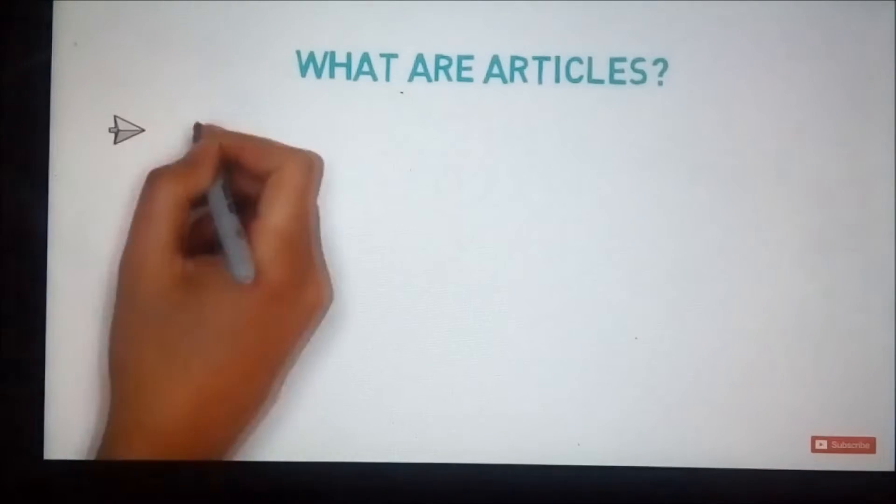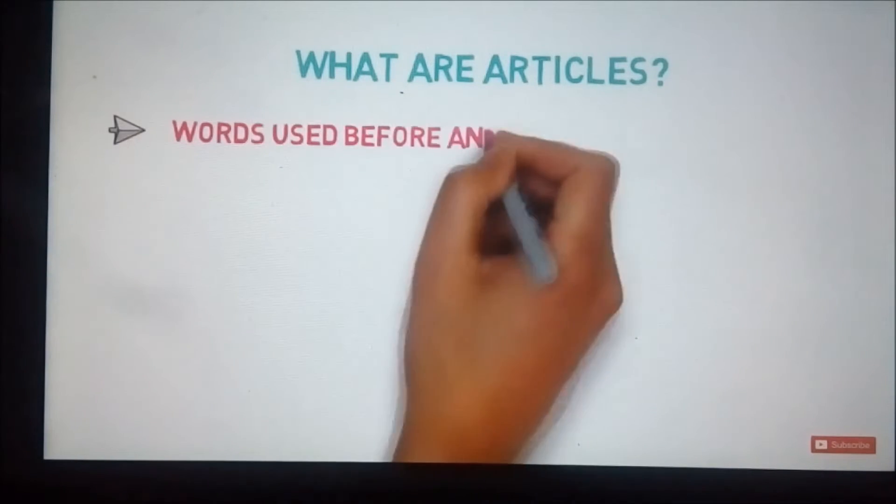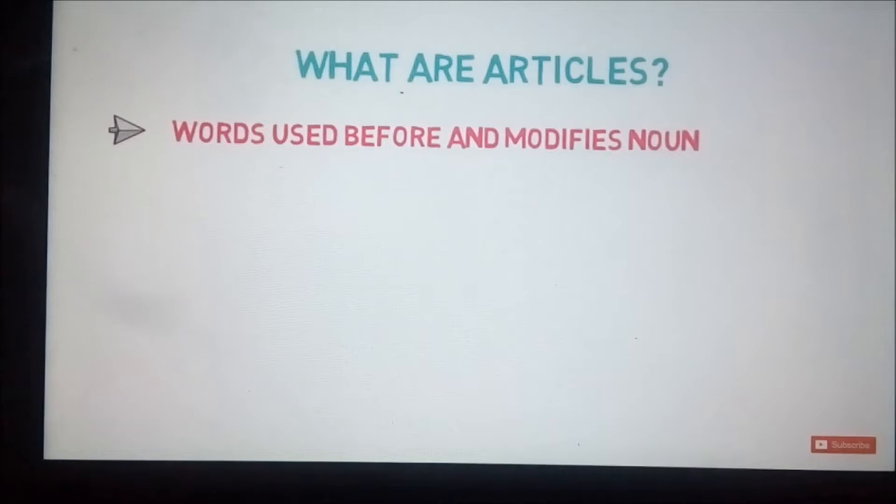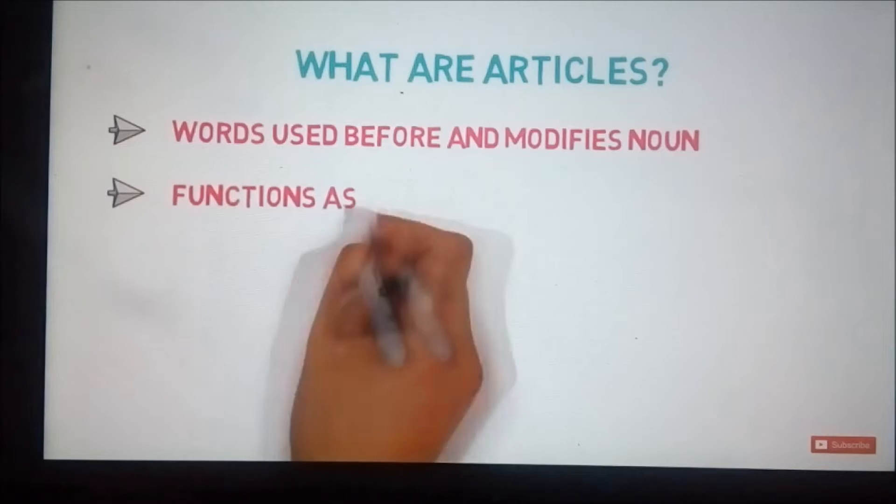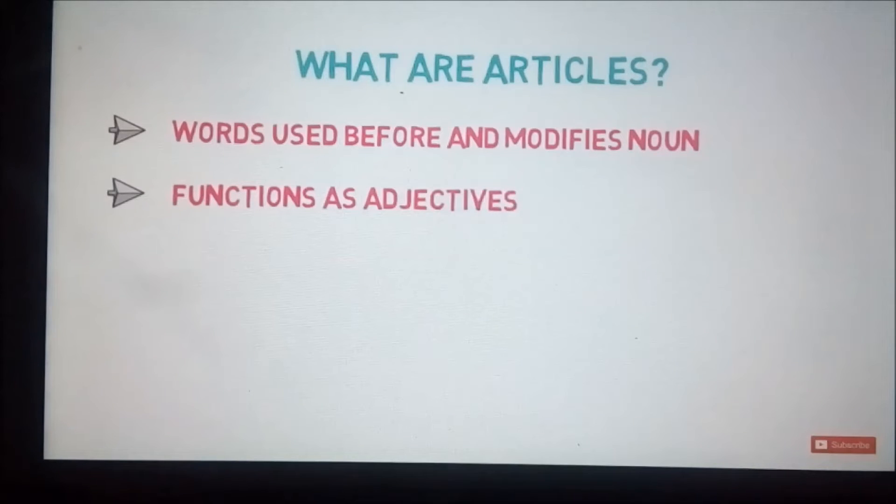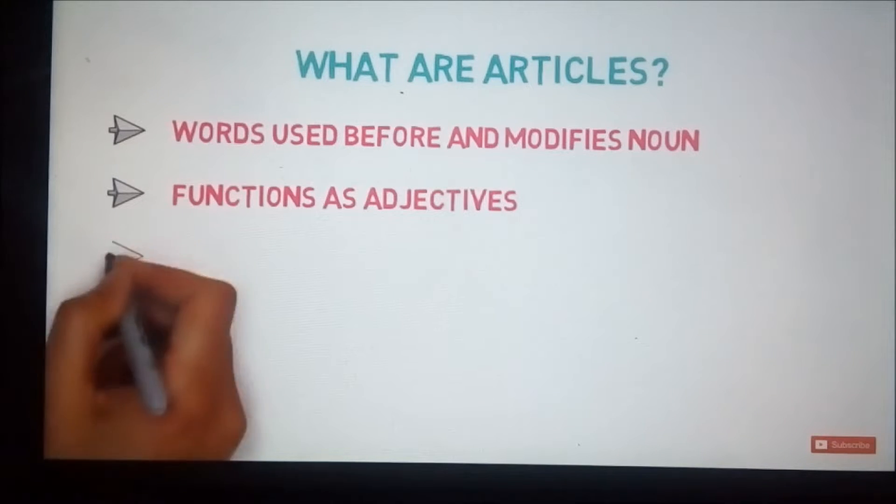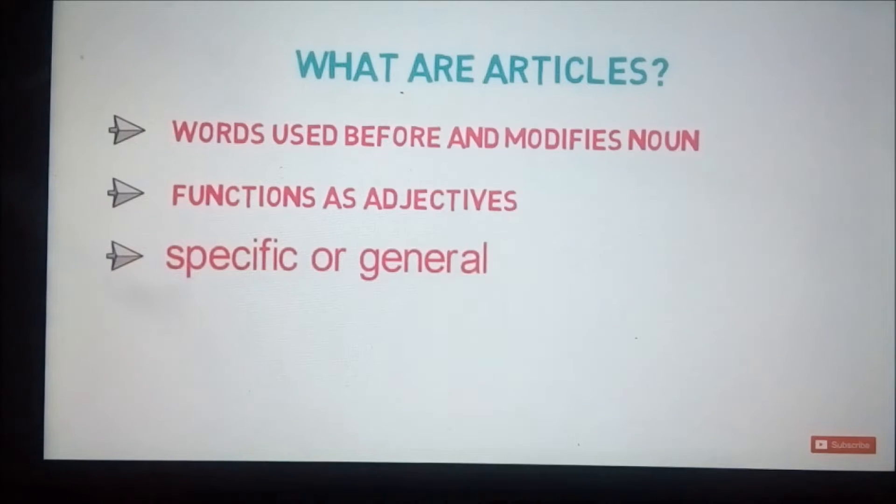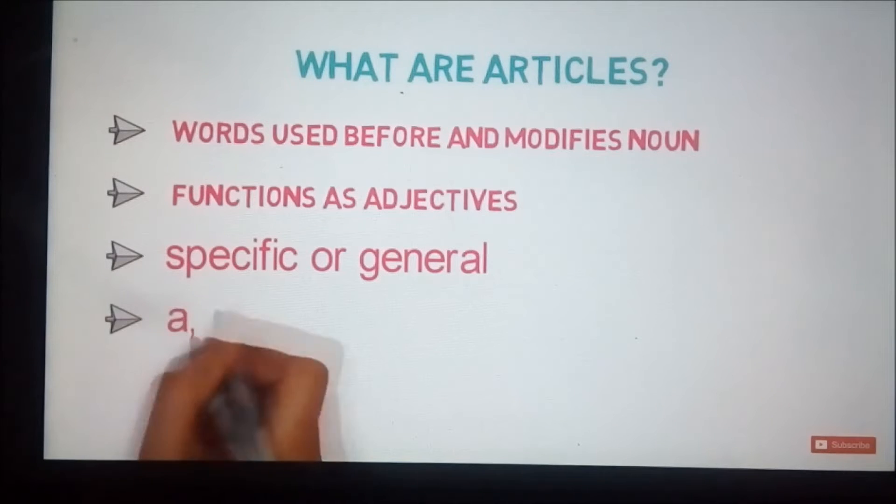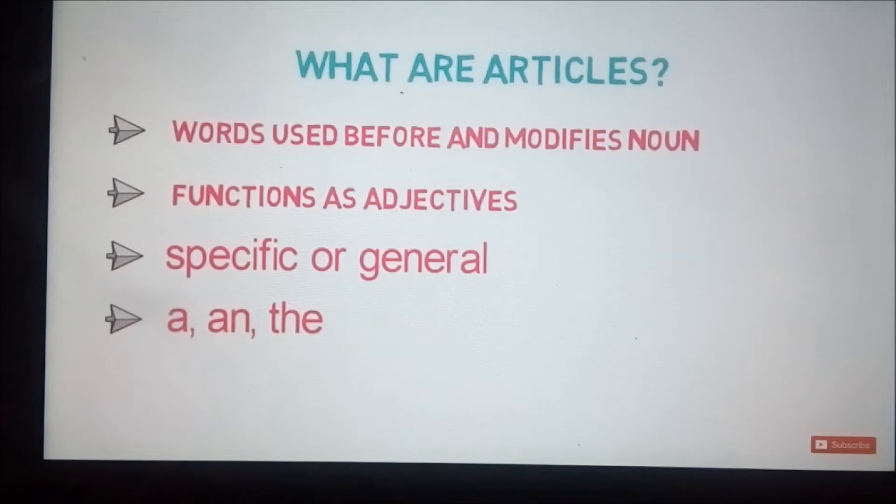So what are articles? Articles are words used before nouns and they modify nouns. As they give more information about nouns, they function as adjectives in the sentence. Articles define whether a noun is used in specific context or general context. There are three articles in English: a, an, and the. These articles are categorized in different types as per their usage. Let's look into that now.